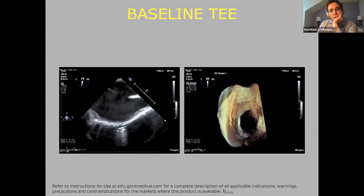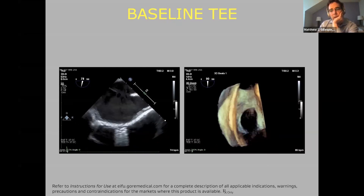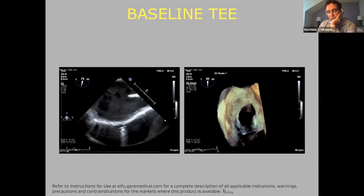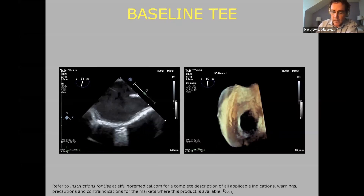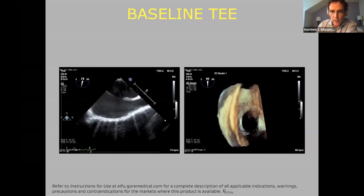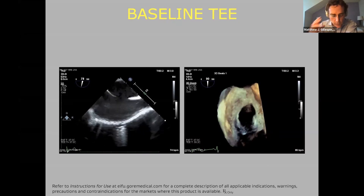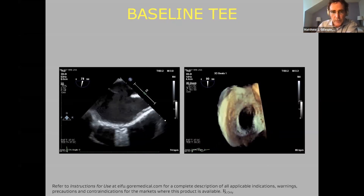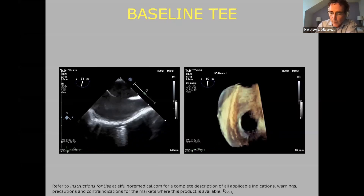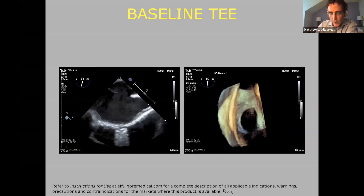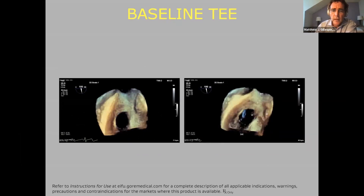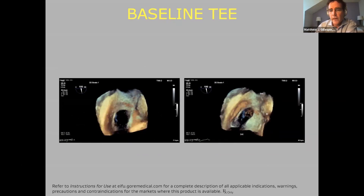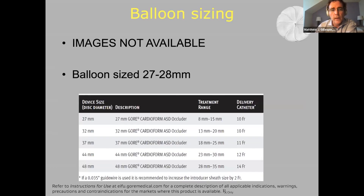TEE can give you these great real-time 3D images, which are not necessarily required but are helpful pre and post to form a picture in your mind of what the ASD looks like — where it is relative to all the rims. That's what the ASD looks like from the RA and LA sides by 3D Echo.